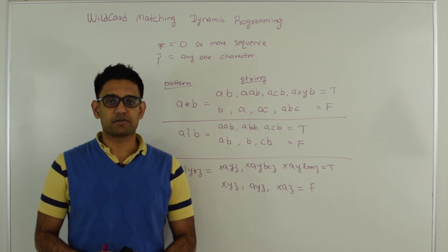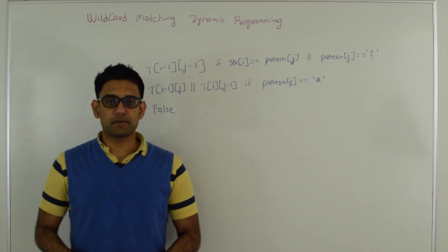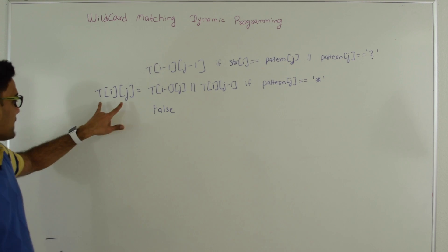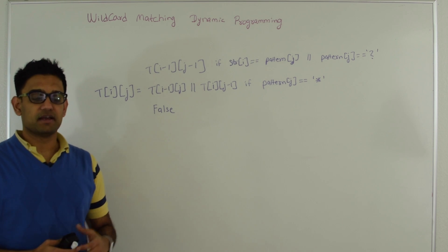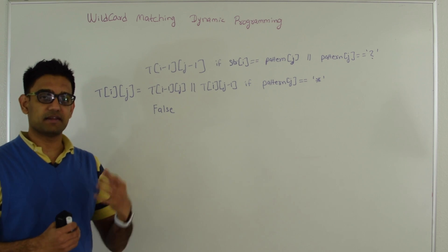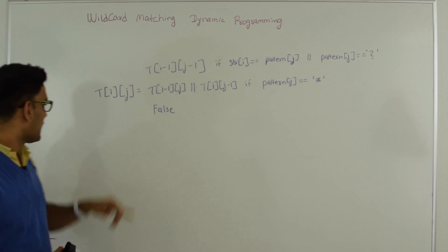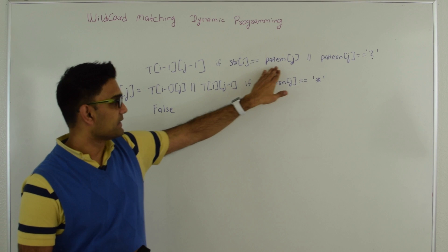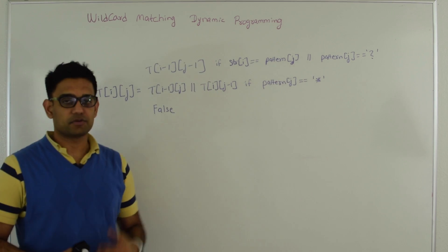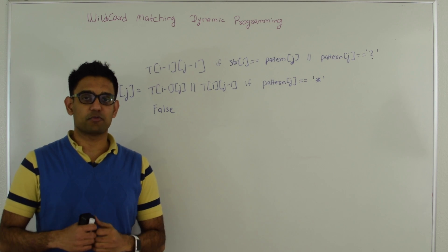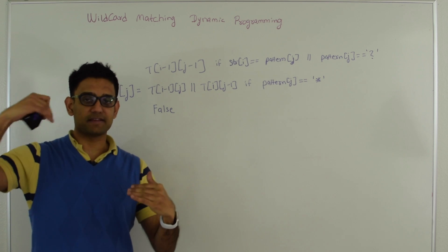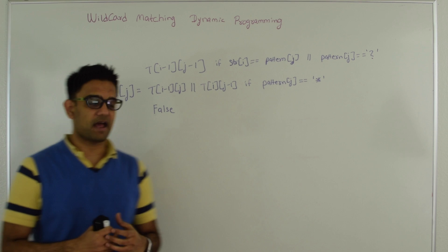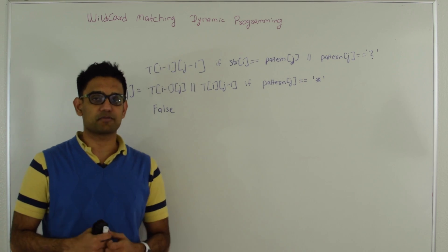We are going to use dynamic programming to solve this. Let's look at the idea behind the bottom-up DP approach. T is a two-dimensional boolean array, and T[i][j] indicates whether the substring of the string from 0 to i and the substring of the pattern from 0 to j are a match or not. T[i][j] equals T[i-1][j-1] if string[i] is the same as pattern[j], or pattern[j] is a question mark. This means we check the diagonal value — excluding i and j, is the rest of the substring a match?